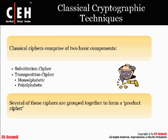Classic cryptographic techniques include ciphers built from substitution and transposition, which can include monoalphabetic or polyalphabetic. Many of these ciphers are grouped together to form a product cipher.